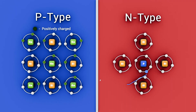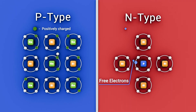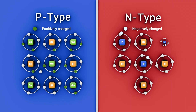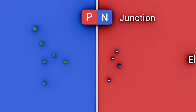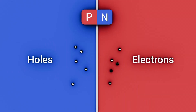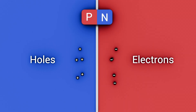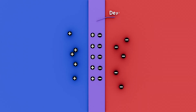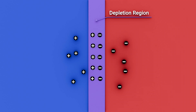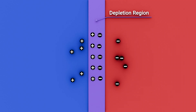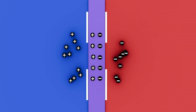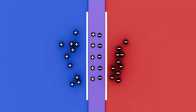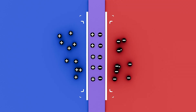The N-side contains free electrons — negative charge carriers. When the P-N junction is formed, electrons and holes recombine near the interface, creating a depletion region devoid of free charge. This region acts as a barrier, preventing charge flow until the applied voltage overcomes it.